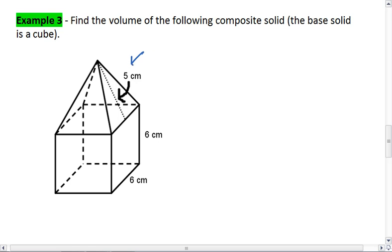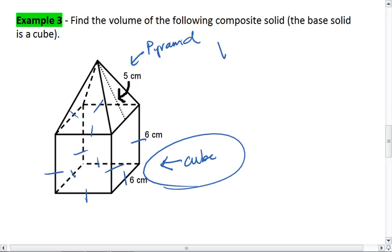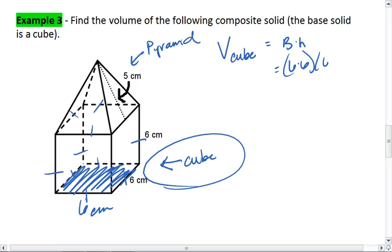For this solid, we have a pyramid on top of a cube, where a cube has all equal faces. I'm going to start by finding the volume of the cube. So the volume of my cube, I'll use this face as the base. This is going to be base times height, which is 6 times 6 times the height of 6. So you get 6 times 6 times 6, this gives me a volume of 216 centimeters cubed.